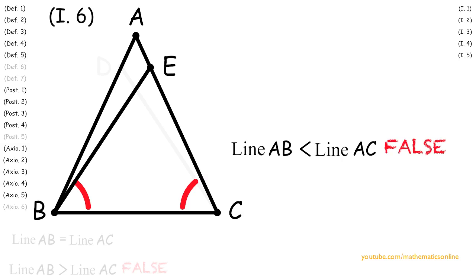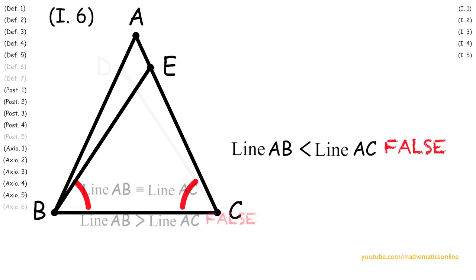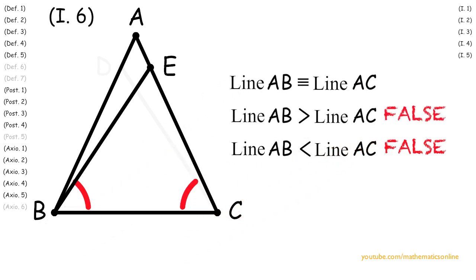So now we are left with two false statements, and so the remaining statement must be true: line AB is congruent to line AC.